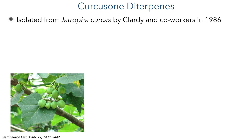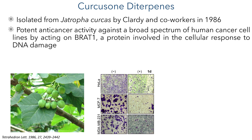The Quercusone diterpenes investigated in this work were first isolated by Clardy and co-workers in 1986 from the Jatropha Kirkus plant. These compounds show potent anti-cancer activity against a broad range of human cancer cells, and they do this by acting on BRAT1, a protein involved in the cellular response to DNA damage.